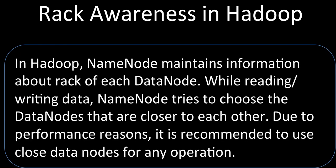In Hadoop, the NameNode maintains information about the rack of each DataNode. Whenever we are reading or writing data, the NameNode tries to choose nodes that are closer to each other, so that we get very good performance. If there are nodes nearby, we can read the data much faster.